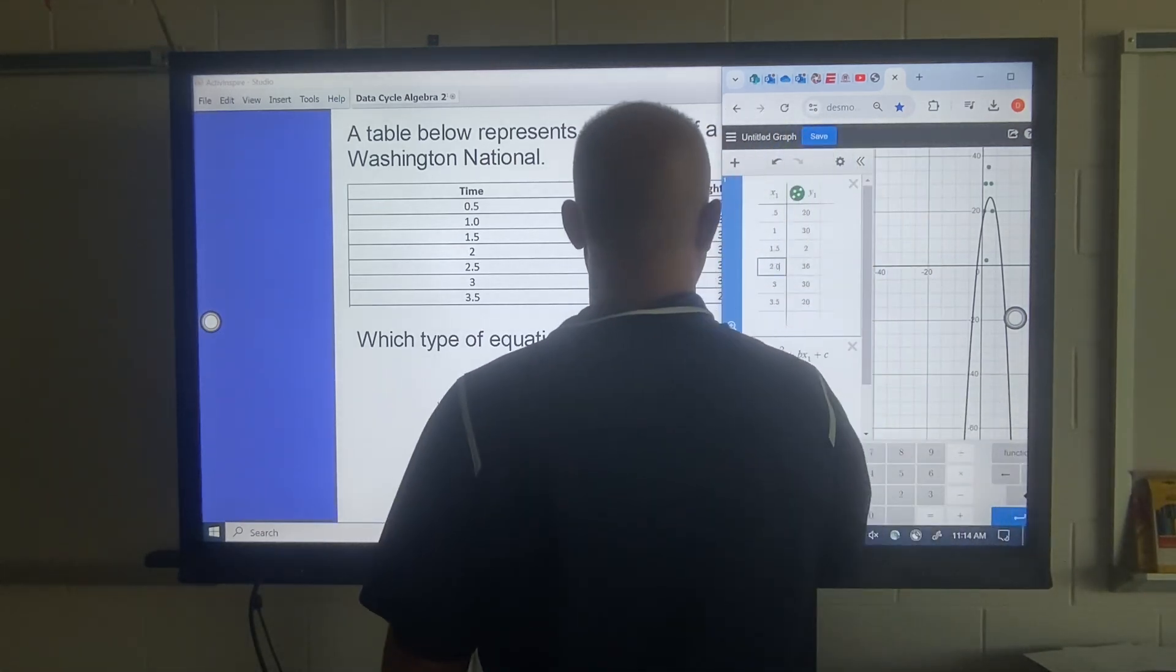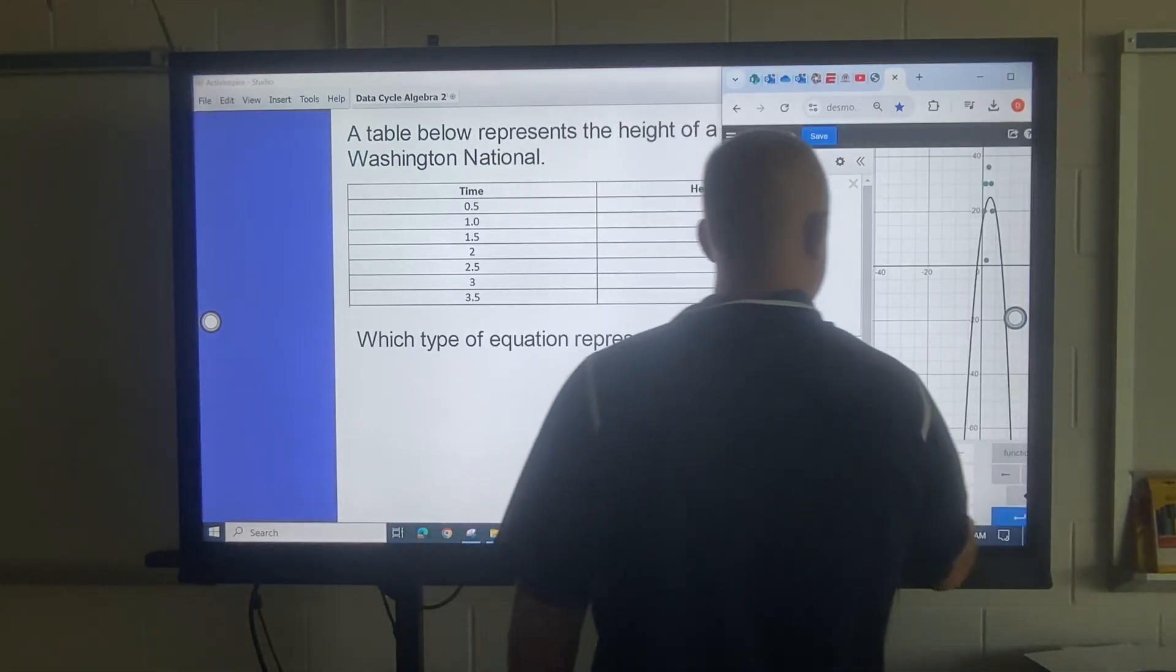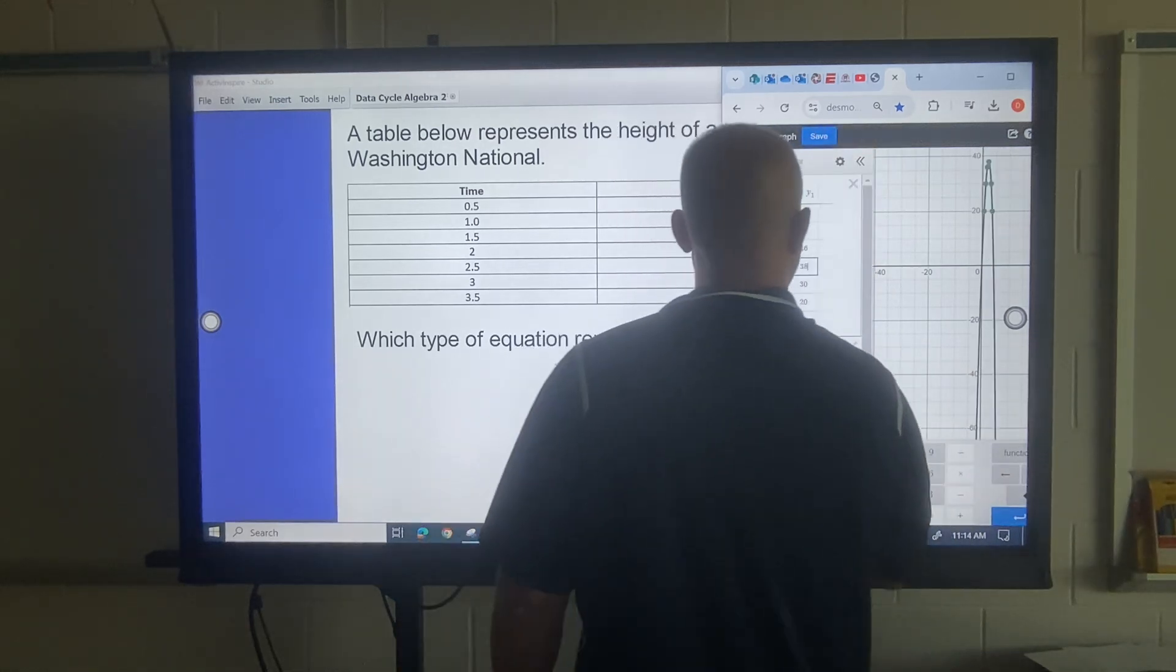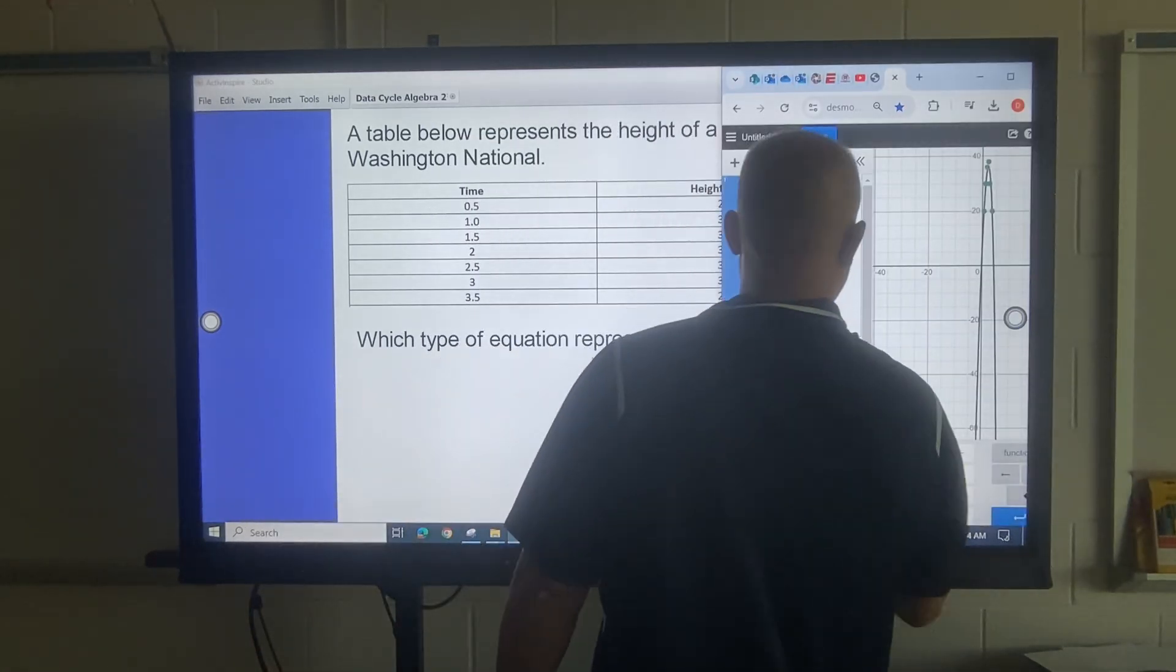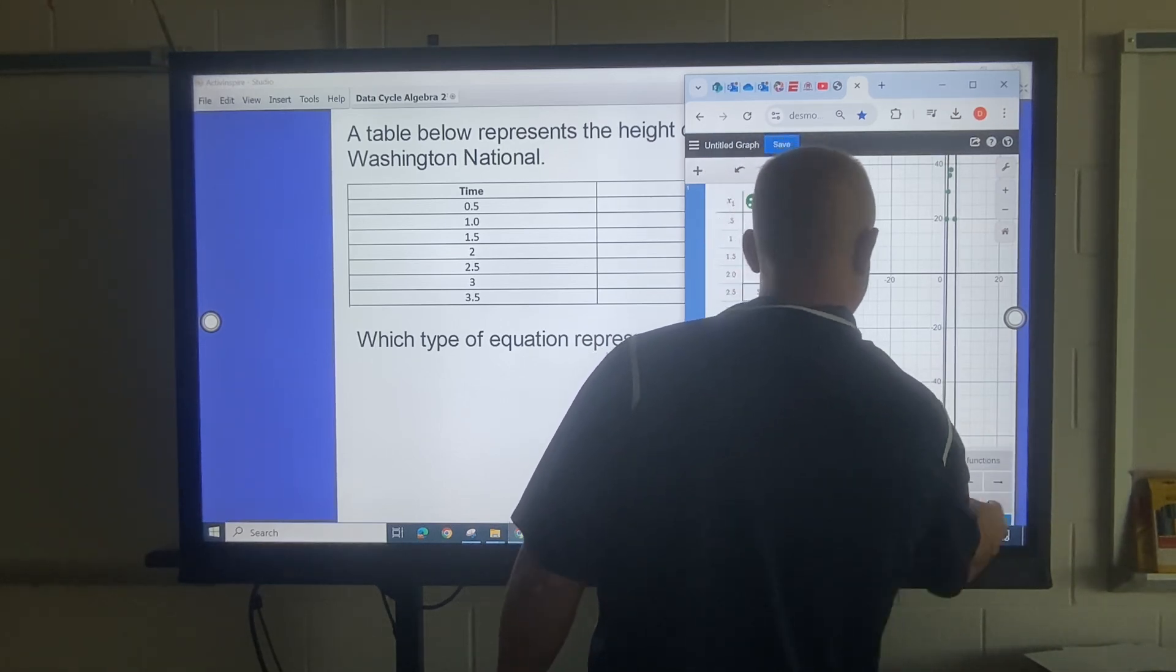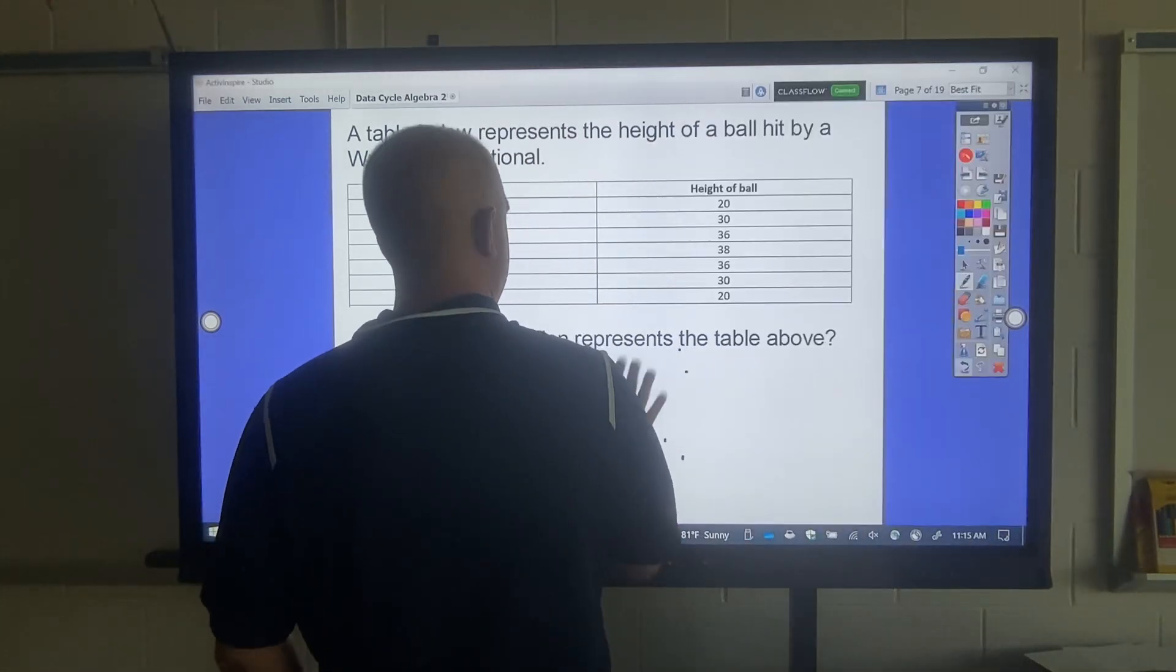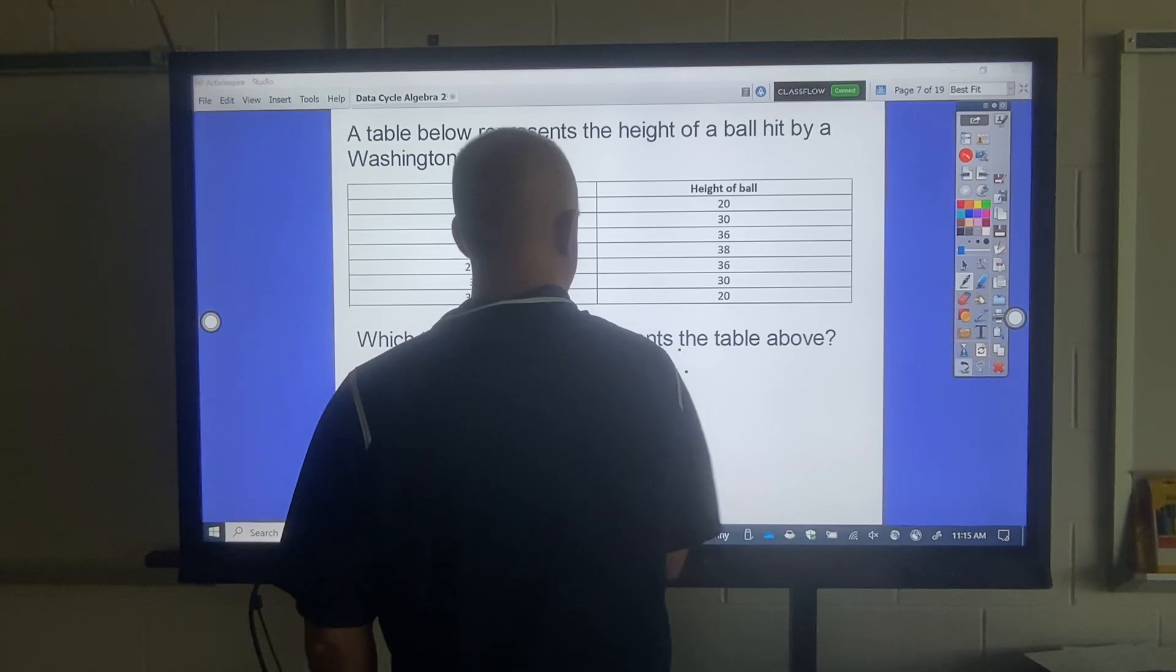Hold on. Let me go back. 2 should have 38 next to it. I was wondering why that wasn't working. 1.5 should have 36 next to it. That's where I made my mistake. 36, 2 is going to have 38, 2.5 is going to have 36, 3 is going to have 30, and 3.5 is going to have 20.